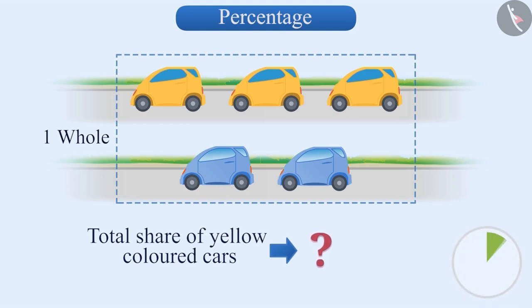Think for a while. You've got it right. There are three yellow coloured cars out of the total five cars. Hence, their share will be 3 by 5.